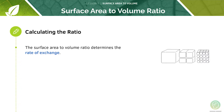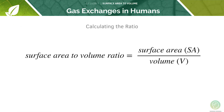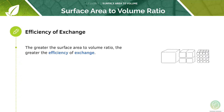The surface area to volume ratio will determine the rate of exchange. The ratio is measured by first calculating the surface area of the cell and dividing it by the volume — surface area to volume ratio equals surface area divided by volume. The greater the surface area to volume ratio, the greater the efficiency of the exchange.